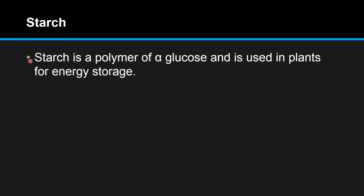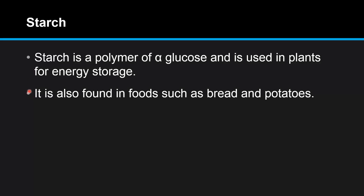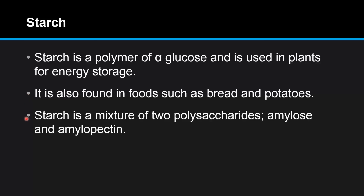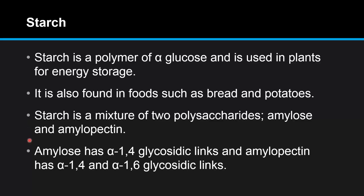Starch is a polymer of alpha glucose and is used in plants for energy storage. It is also found in foods such as bread and potatoes. Starch is a mixture of two polysaccharides: amylose and amylopectin. Amylose has alpha 1,4 glycosidic links and amylopectin has alpha 1,4 and alpha 1,6 glycosidic links.